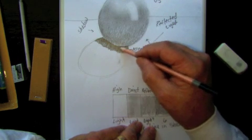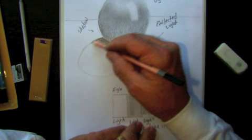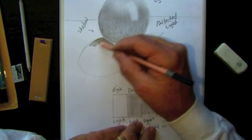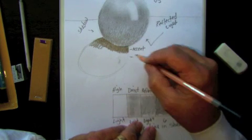So I'm going to work my way out from accent. The next value will be shadow, then reflected, and then finally direct.